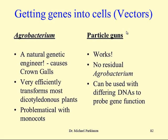So how do we get our genes into the cells? The two techniques that are very widely used are agrobacterium and biolistics — that is, particle guns. Agrobacterium is a natural genetic engineer: it causes crown galls and very efficiently transforms most dicotyledonous plants, but it has been problematical with monocots.